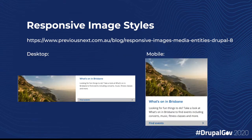For example, in this design, a card will use both a different image size and a different ratio between desktop and mobile viewpoints. By using these responsive image styles, we can use the smallest appropriate image for each viewport.